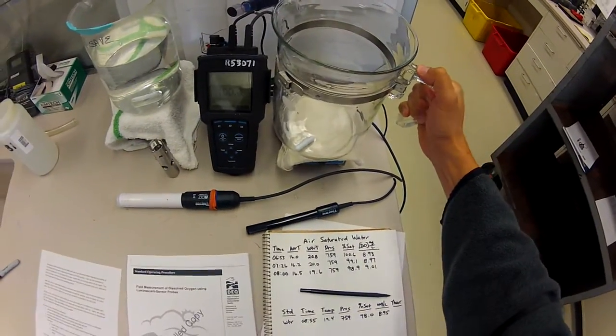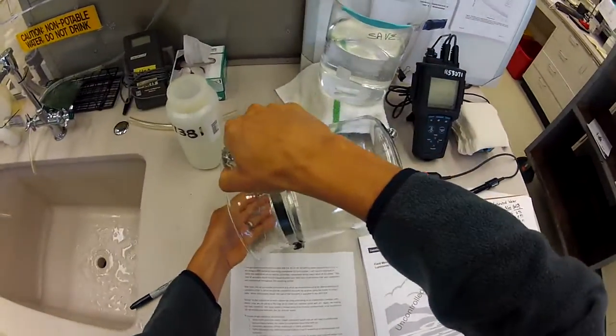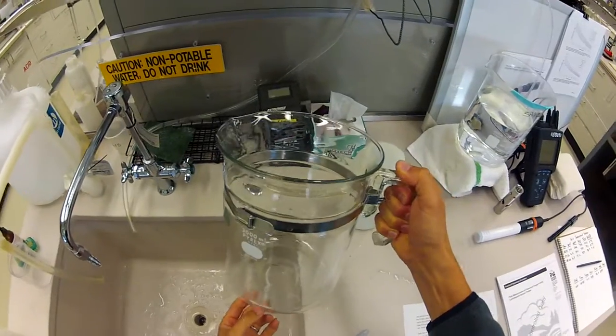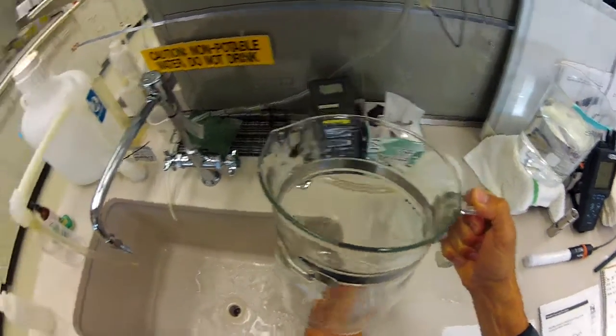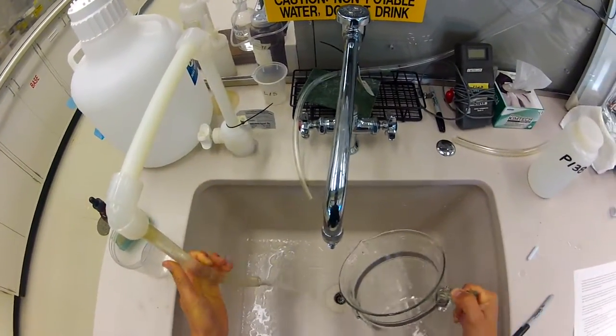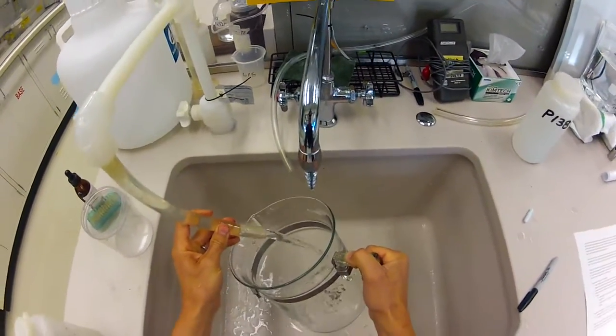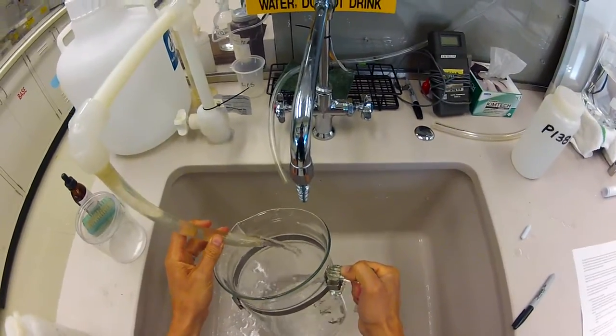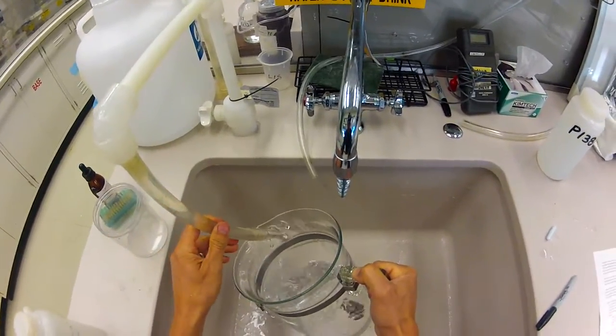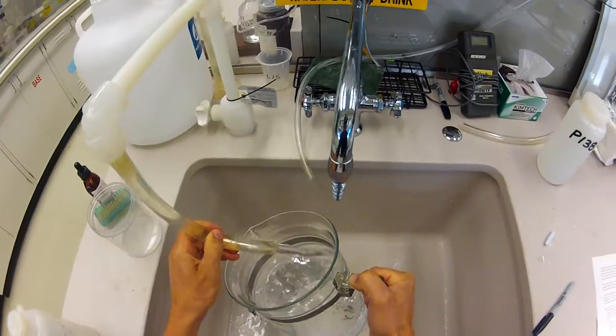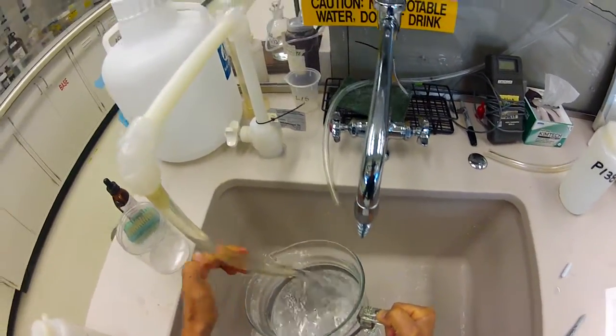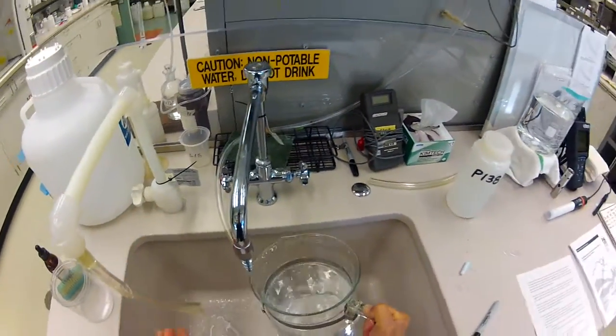Let's go ahead and show you how to make this standard. I've got a vessel here that I'm going to be able to put about one and a half liters of water in. I'm going to use water from this tap, which happens to be deionized water. I happen to know that the water coming out of this tap is going to be at right about 100% saturation and usually pretty near room temperature.